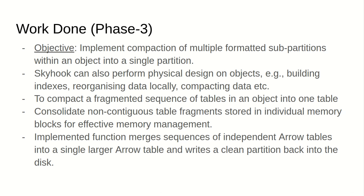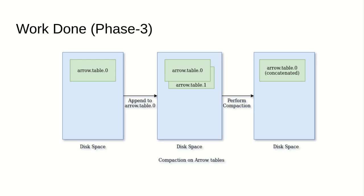Skyhook also lets us perform physical design on objects — for example, building indexes and reorganizing data locally. I implemented the data compaction functionality for effective memory management. For example, here's a table in the disk space, Arrow Table 0, to which we perform an append operation. The appended table, Arrow Table 1, is written to a different address location in the disk space. When the perform compaction function is invoked, the tables are concatenated and stored at one particular location as the original table.